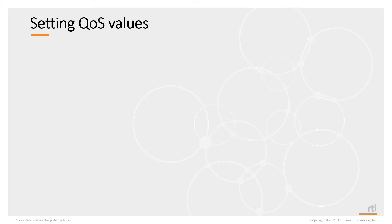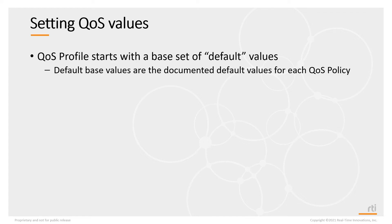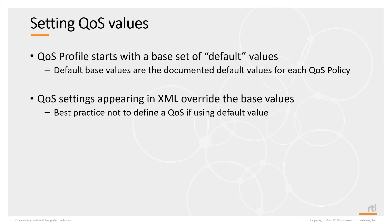When you define a QoS profile, it starts out with a base set of default values — the documented defaults for every QoS policy. When you write a QoS profile, what you're doing is overriding those base values. Best practice is not to define a QoS value inside a QoS profile unless you're modifying the default. If you want to use the documented default value of a QoS policy, don't define that policy at all inside the profile.